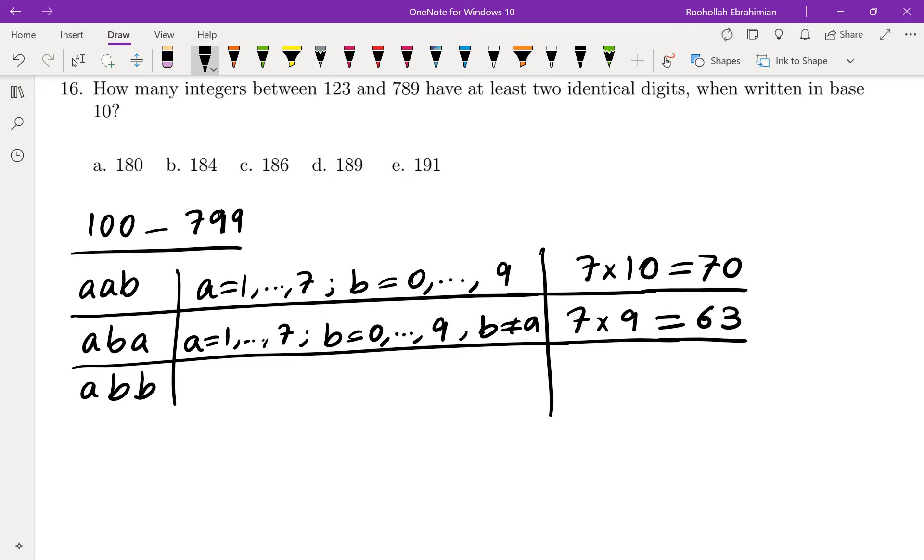The third case, we have a again between 1 and 7, b between 0 and 9, and I don't want to count the ones that are a a a. I have counted them in case 1, so b cannot be a.